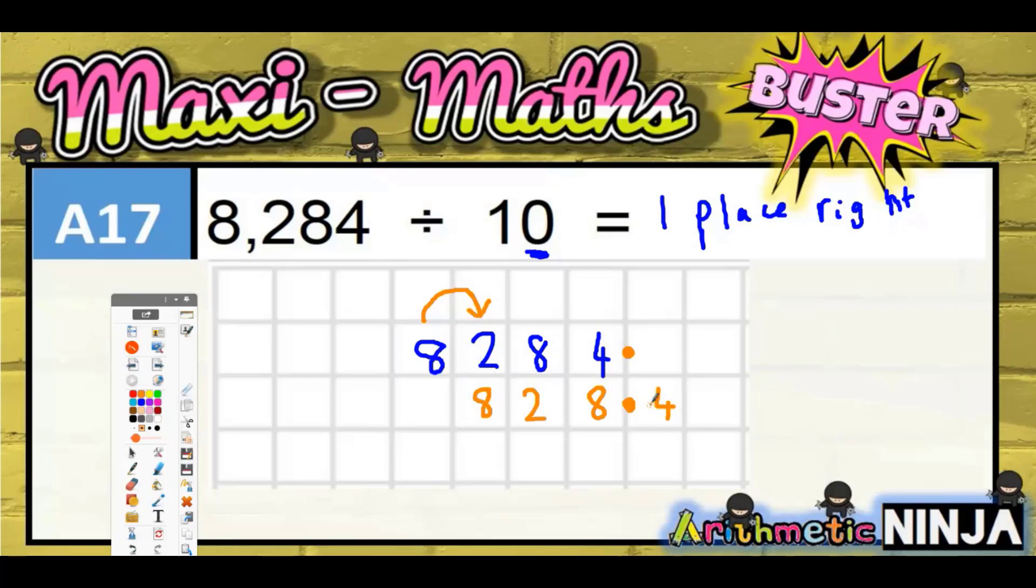Of course, what's important here is that you only do one digit per square. If you start trying to do two digits in a square, then you're going to get confused when you try and move things.